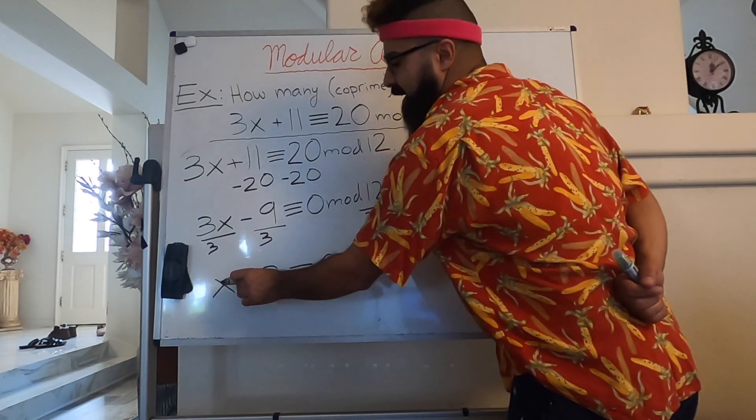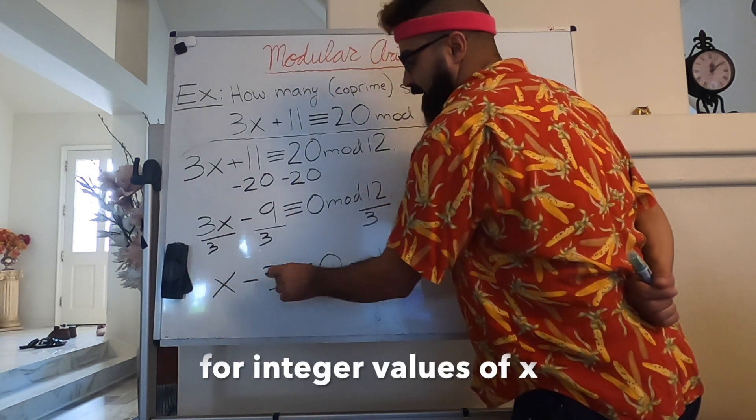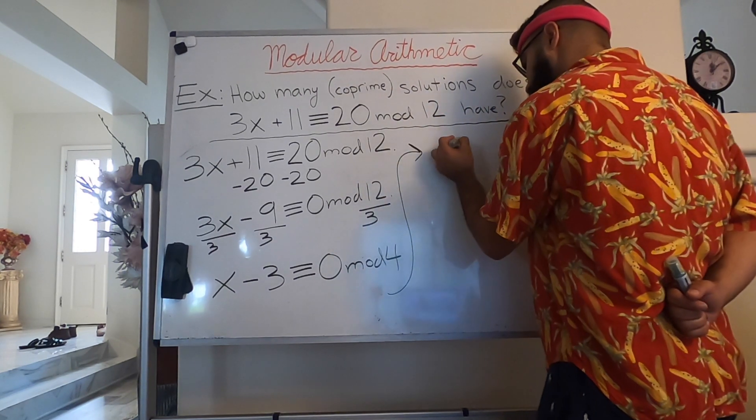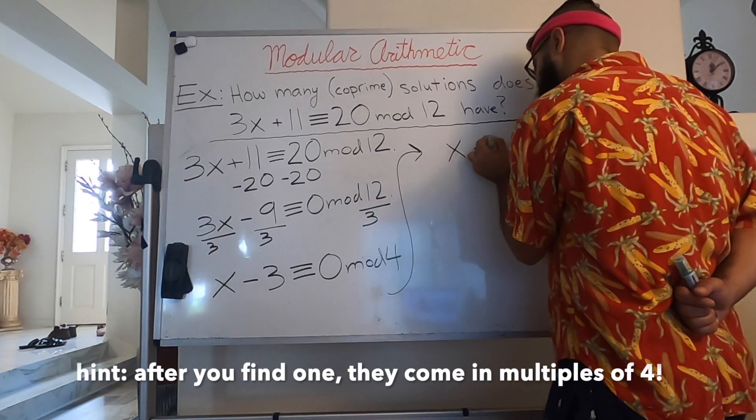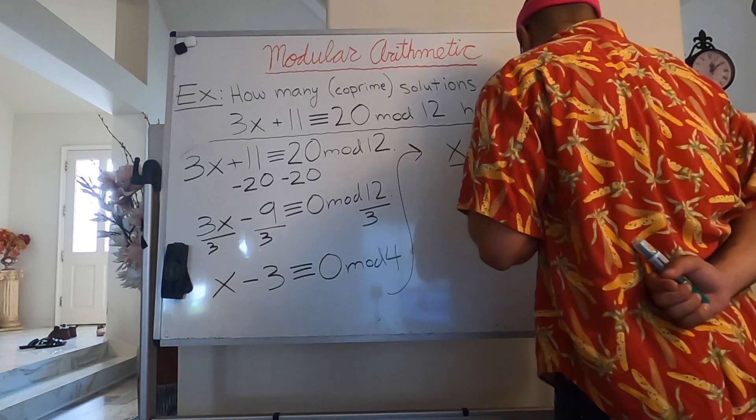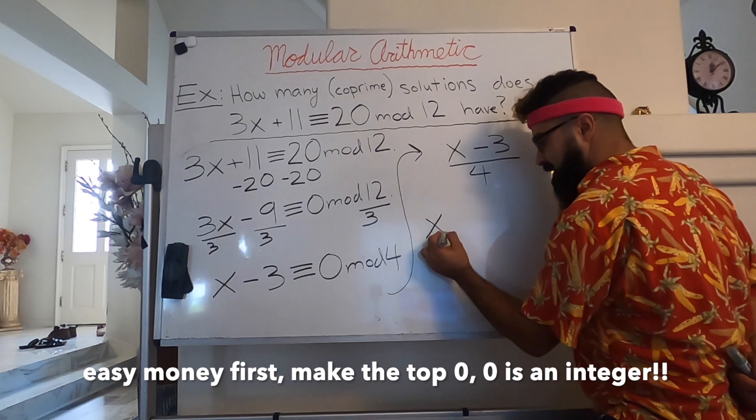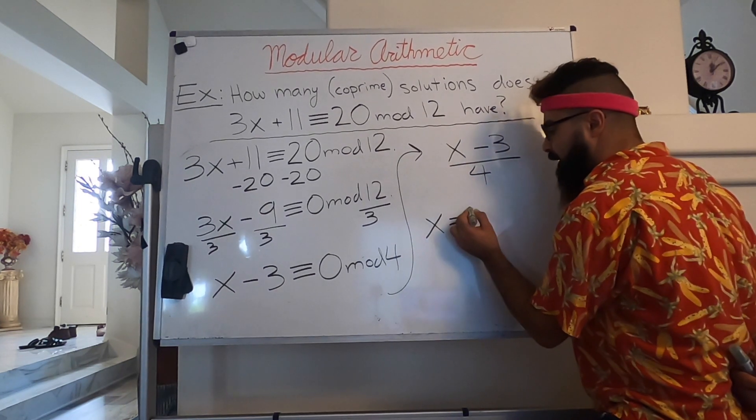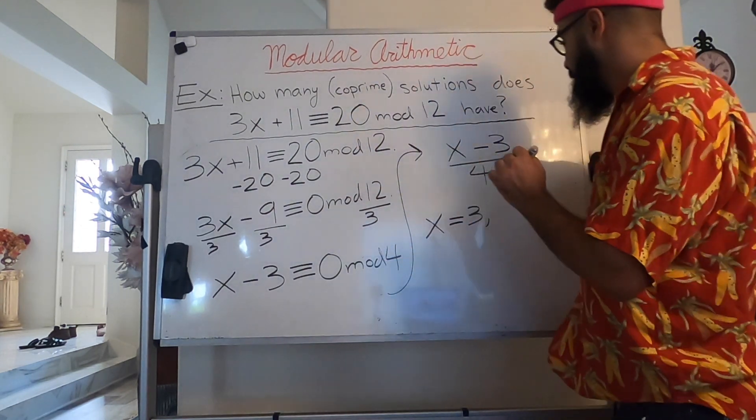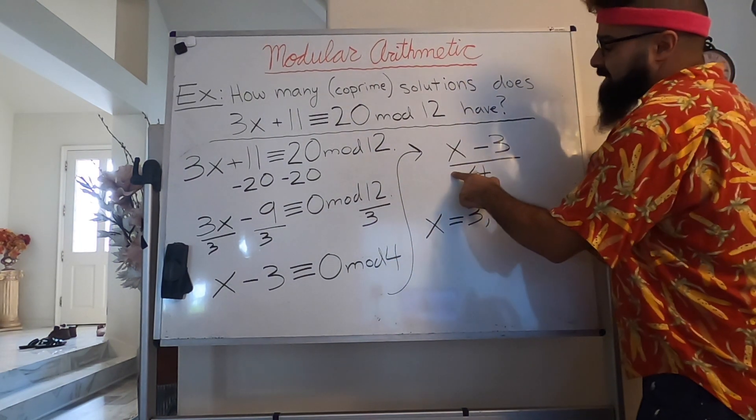Now we want to know for how many integers x is x minus 3 divided by 4 an integer. So, x minus 3 divided by 4, we want this to be an integer. The easy money first is when x equals 3, and that's because the top becomes 0. 0 divided by anything is 0, which is still an integer.